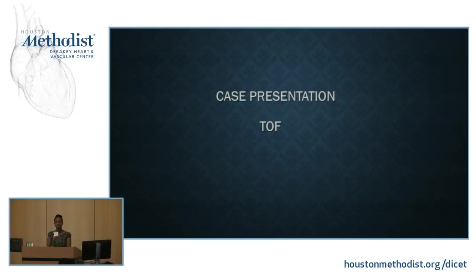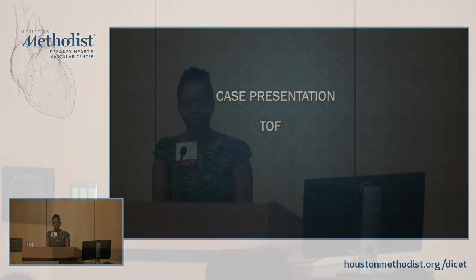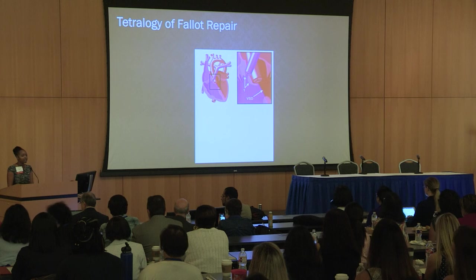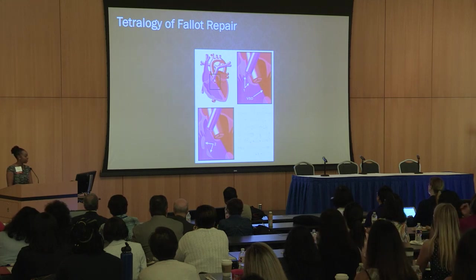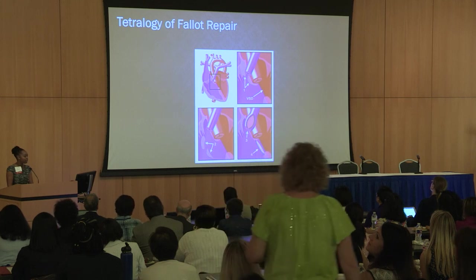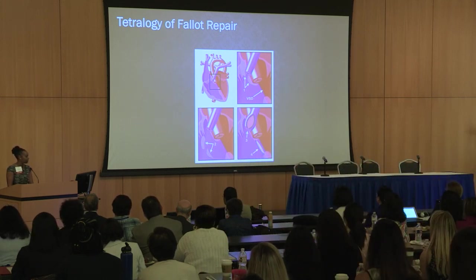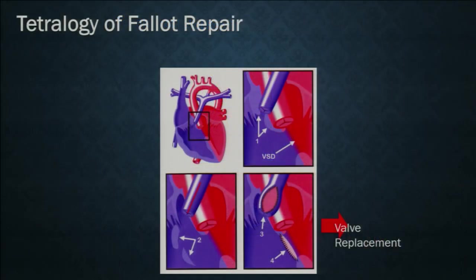Let's highlight Tetralogy of Fallot, because it encompasses most lesion types we see — obstructive lesions as well as shunts. Tetralogy of Fallot involves four major lesions: overriding aorta, pulmonary artery stenosis, VSD, and RV hypertrophy. Initial repair involves closing the VSD with a patch, resecting and widening the pulmonary artery, applying a patch to allow pulmonary blood flow, and reconstructing the RV outflow obstruction. After repair, a patient will require a pulmonary valve replacement at some point in their life.